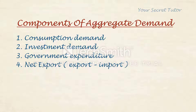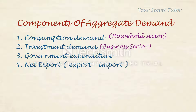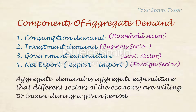Each component corresponds to a sector of the economy. Consumption demand is the household sector. Investment demand is the industrial sector. Government expenditure is the government sector. Net export is the foreign sector — making this a four-sector model. Aggregate expenditure that different sectors of the economy are willing to incur during a given period of time is our aggregate demand.